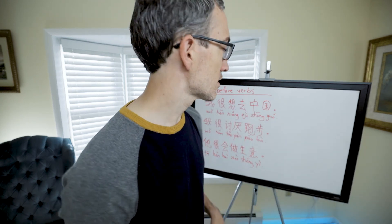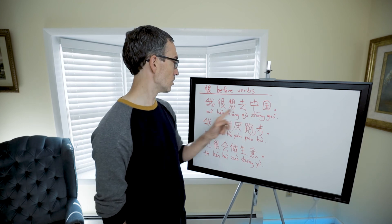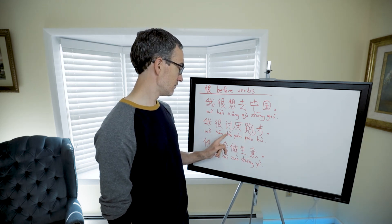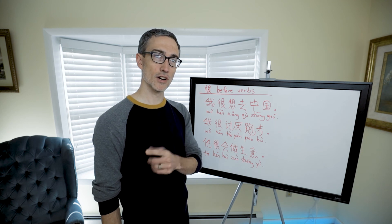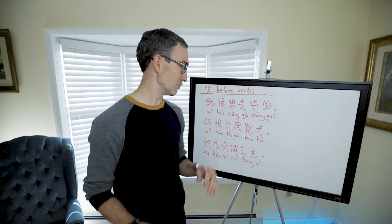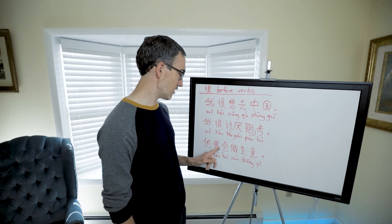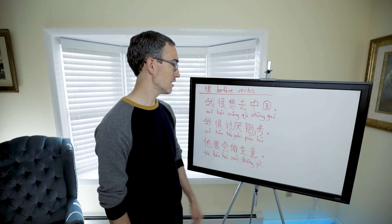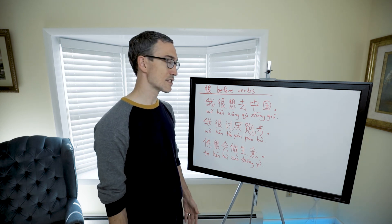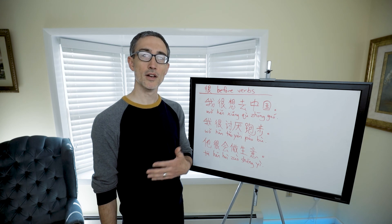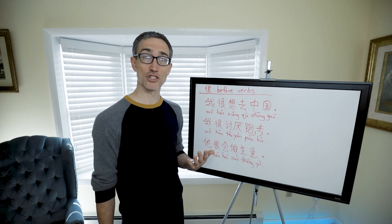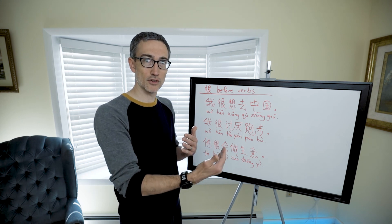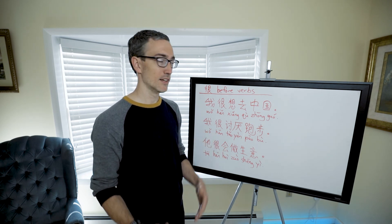Some examples: 'I very want to go to China.' 'I very hate running' — that's not true, I love running, but a nod to people who can't stand it. 'He very is able to do business' — he really knows how to do business. So 'hěn' can go before some verbs. It's not complex, just important to point out because it sounds unintuitive to English speakers. In Chinese you can use 'hěn' (very) as well as 'zhēn' (really).